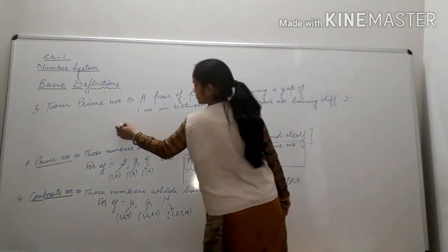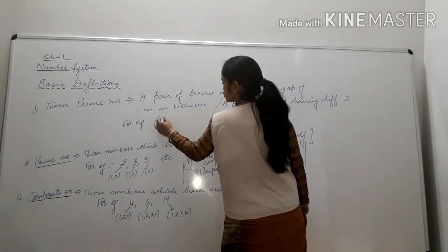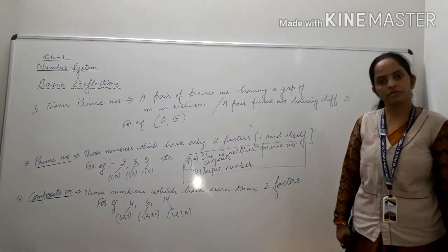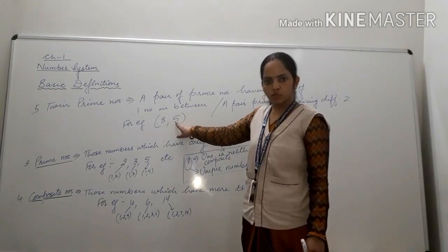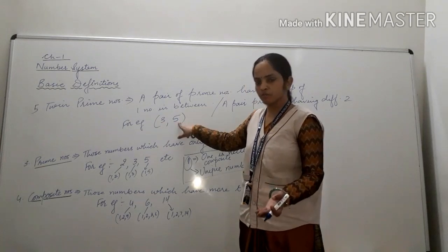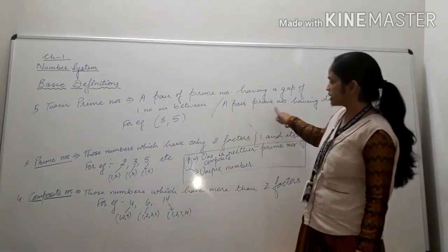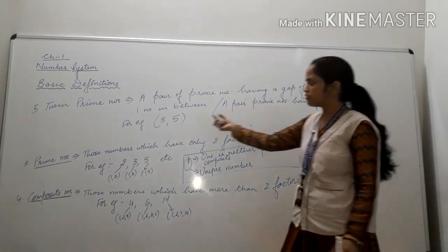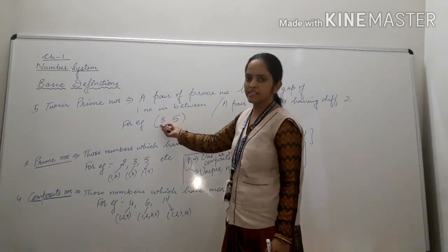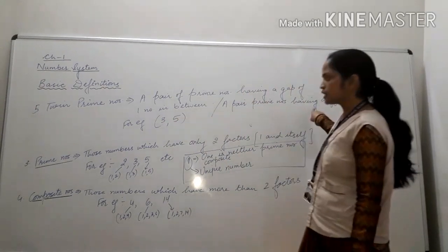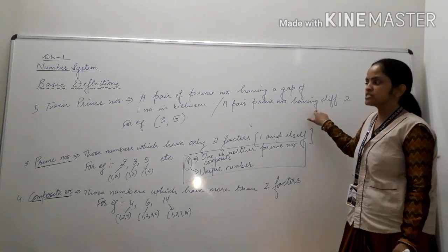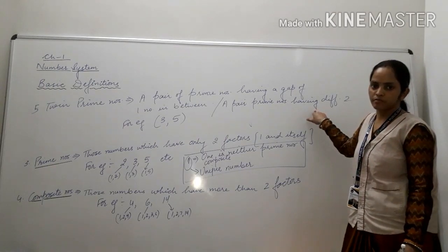For example, what can we say about 3 and 5? Both numbers are prime numbers, and there is one number gap between them — only 4 is in between. Using the second definition: 5 minus 3 gives 2, so the difference is 2. A pair of prime numbers having difference 2 are known as twin prime numbers.